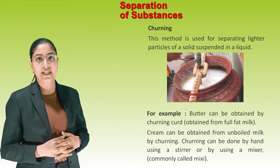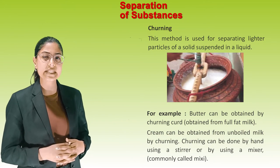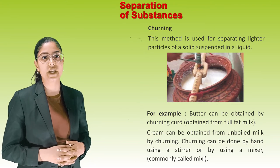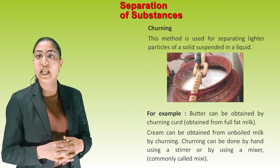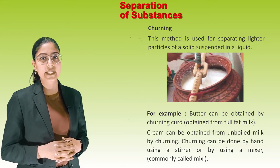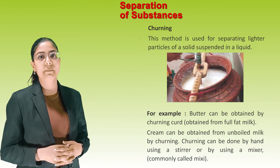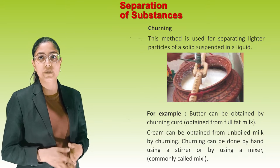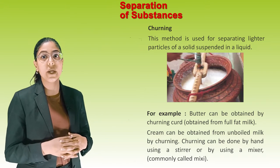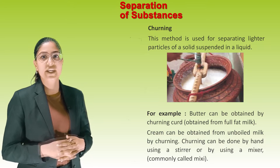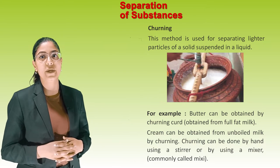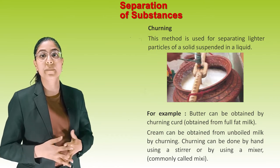Churning: This method is used for separating lighter particles of a solid suspended in a liquid. For example, butter can be obtained by churning curd obtained from full-fat milk. Cream can also be obtained from unboiled milk by churning. Churning can be done by hand using a stirrer or by using a mixer, commonly called a mixi.